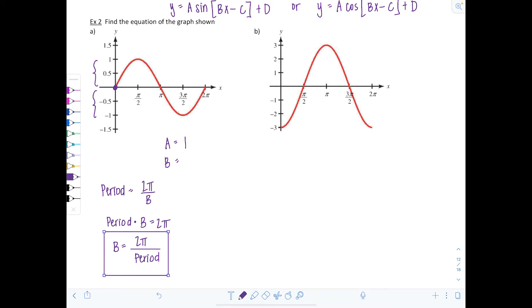All right, so how am I going to figure that out from the graph? Well, one complete period is being shown here. It starts at zero and it ends at 2 pi. So if the period is 2 pi and B is equal to 2 pi divided by the period, then we have 2 pi over 2 pi, which is 1. So B is just 1.